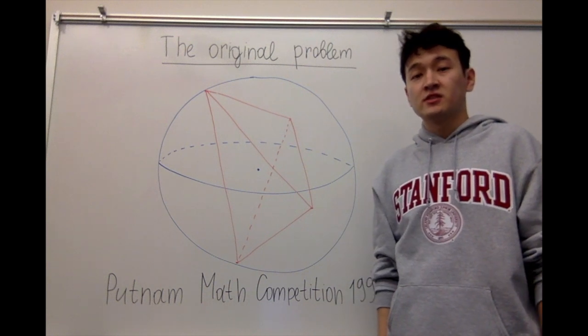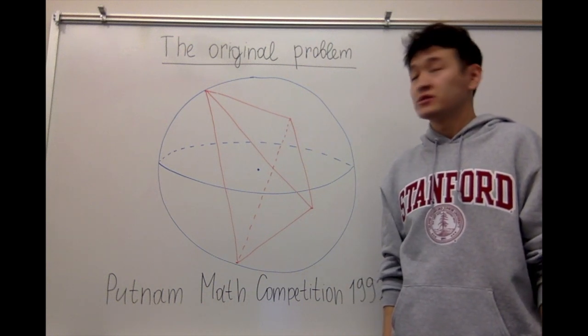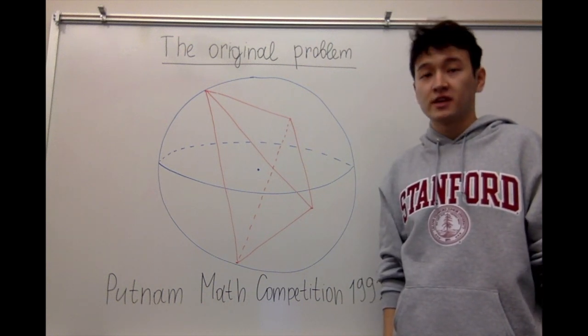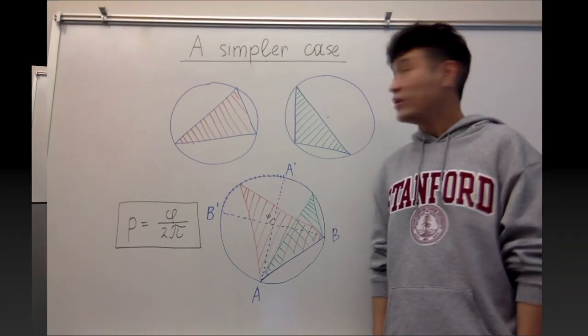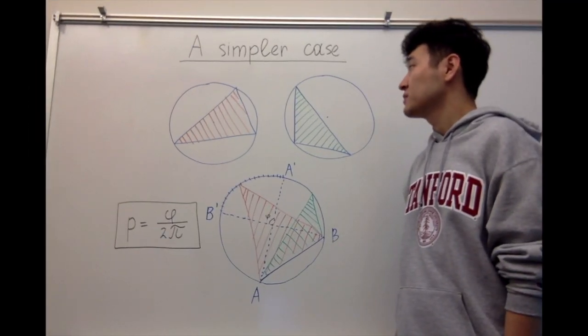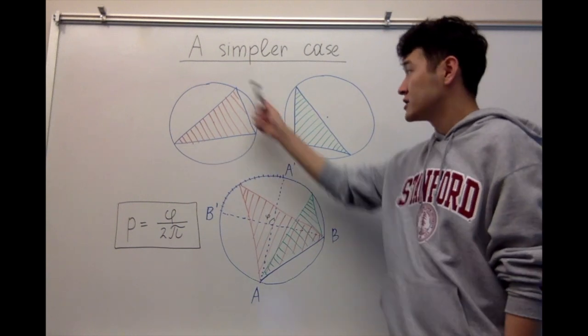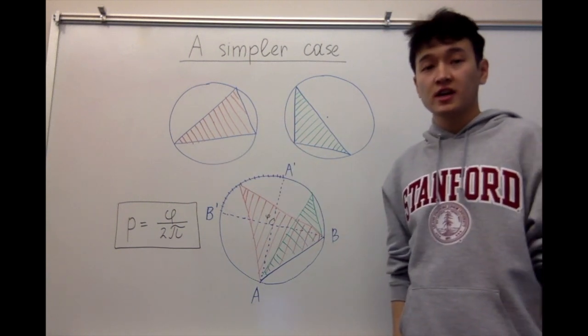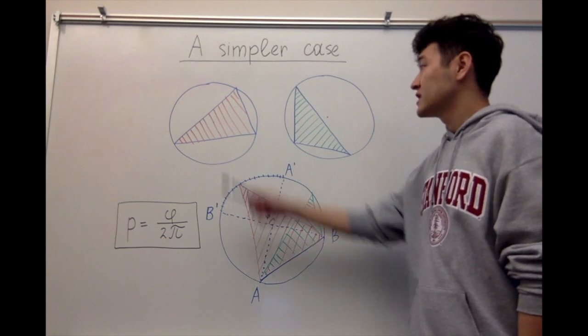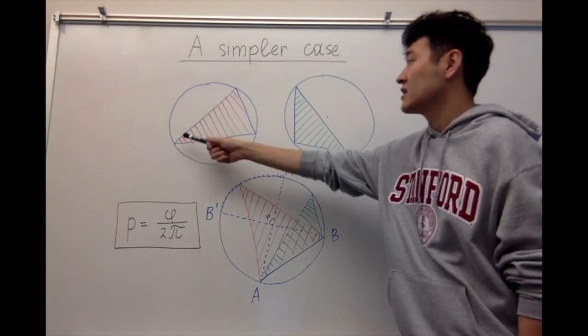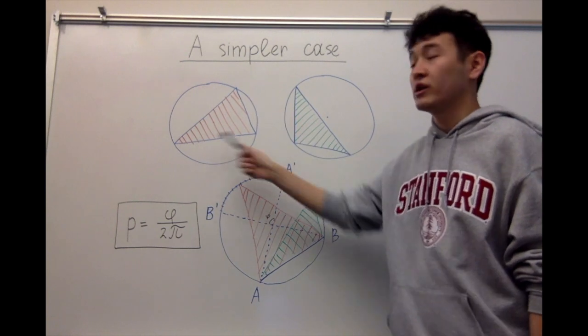This problem is considered difficult, but today we're going to solve a simpler case. Now we have a circle in a two-dimensional plane and three points are chosen uniformly at random on the circle. The question is: what is the probability that the center of the circle lies inside a triangle formed from those three points?